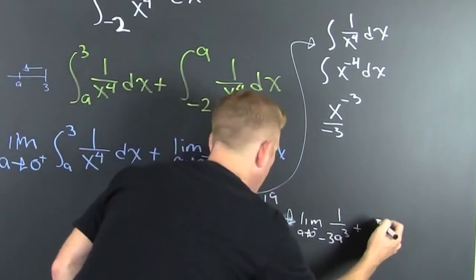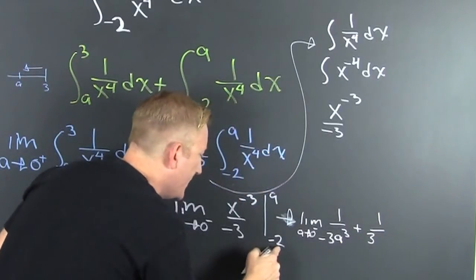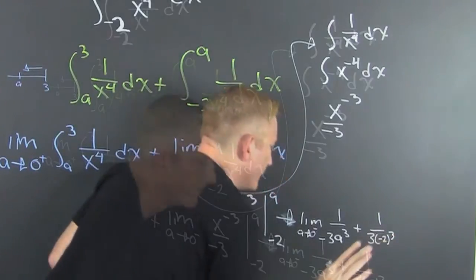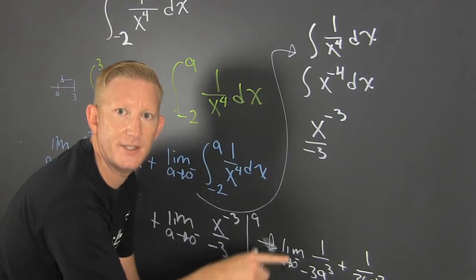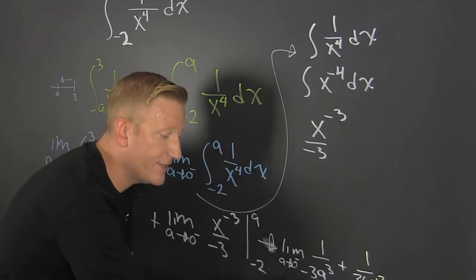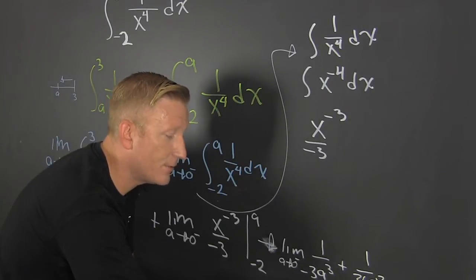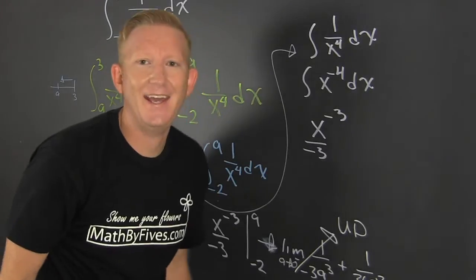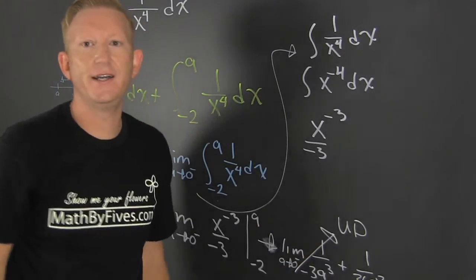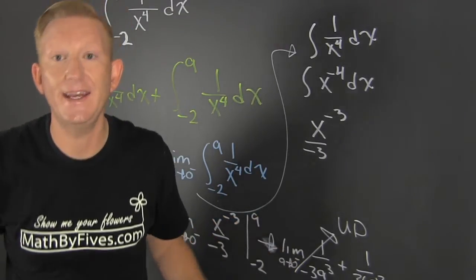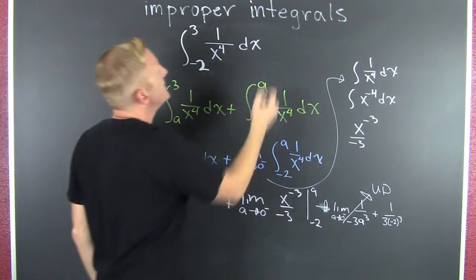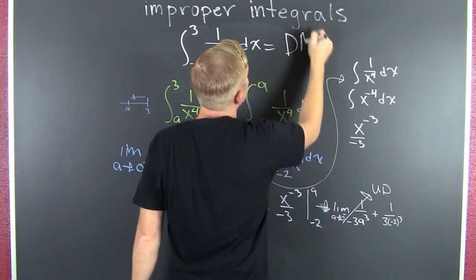So this is 1 over 3, and then minus 2 to the third. You can never divide by zero — when we put 0 in for a, that's undefined. I just can't evaluate that integral. It's undefined, it's divergent. If one piece of your integral is divergent, then the whole thing is divergent. So this does not exist.